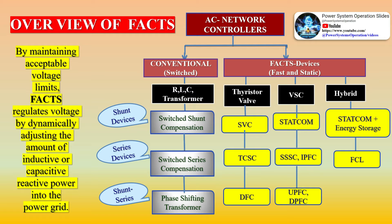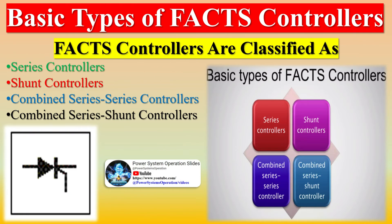FACTS improves transient stability of the system, controls real and reactive power flow in the line independently, provides damping of oscillations which can threaten security or limit usable line capacity, better utilization of existing transmission system assets, increased transmission system reliability and availability, lower vulnerability to load changes and line faults, increased dynamic and transient grid stability, reduction of loop flows, and increased quality of supply for sensitive industries through mitigation of flicker, frequency variations, and environmental benefits.